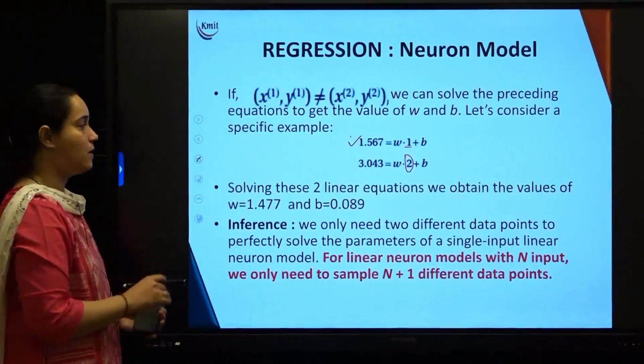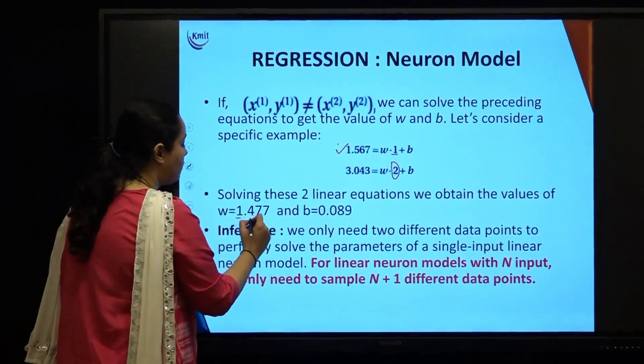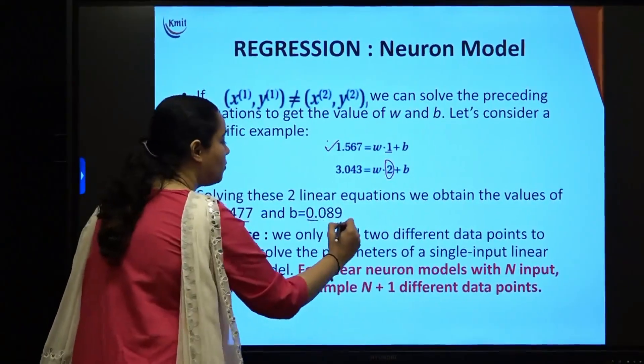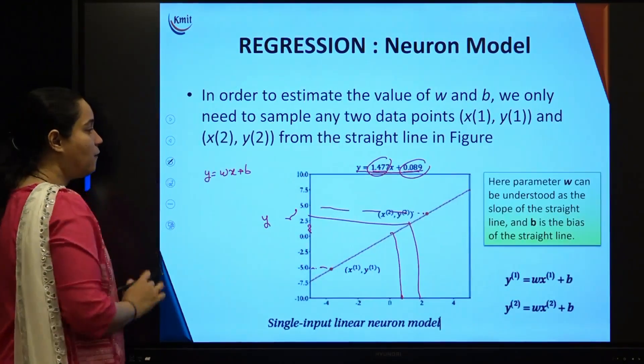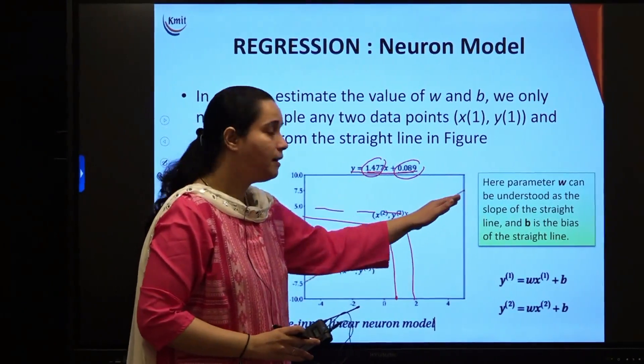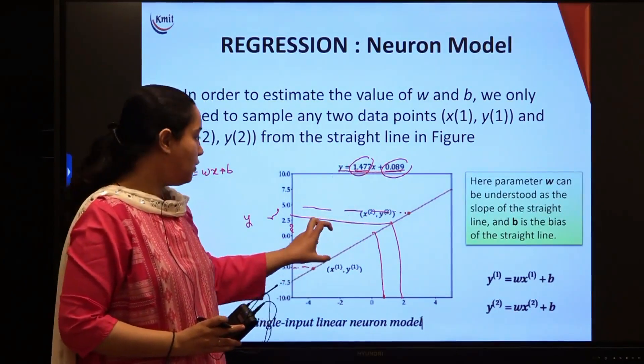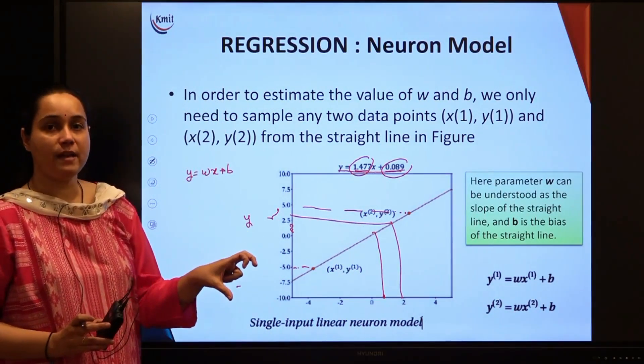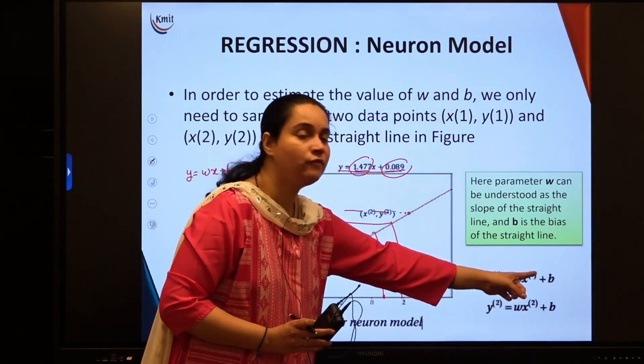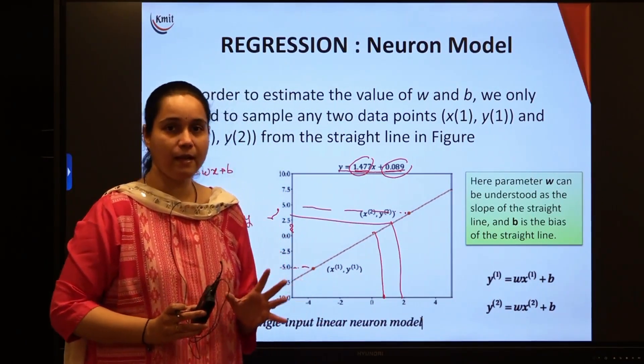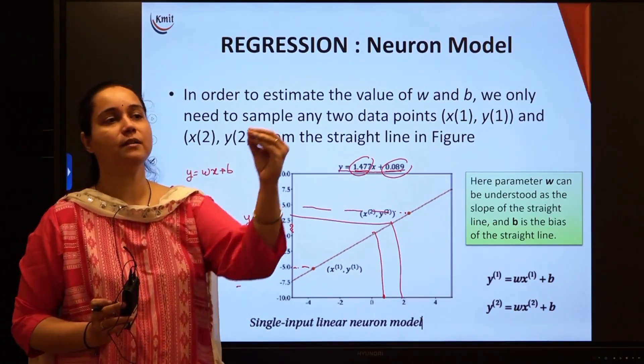When you solve these two linear equations, you found out that for this optimum curve that we got, the weight suitable was 1.477 and 0.089. You understood that if I am able to get the best shape or best inclined curve and try to solve these variables, then I will get the most suitable parameter of w and b. That is our main aim.